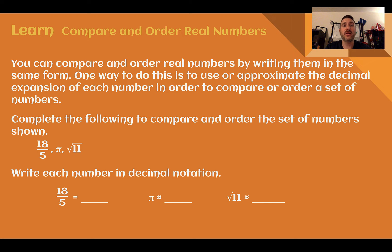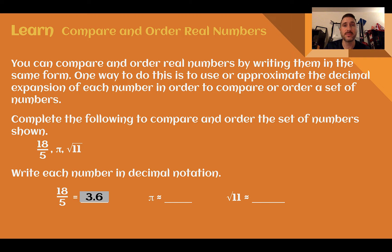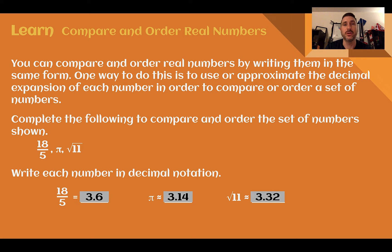So if we wanted to compare the following numbers and order them — 18 fifths, pi, and the square root of 11 — the first thing we would want to do is write them in their decimal notation. So 18 fifths: 18 divided by 5 is 3.6. We could use long division to figure that out. Pi is approximately 3.14, and the square root of 11 is about 3.32.